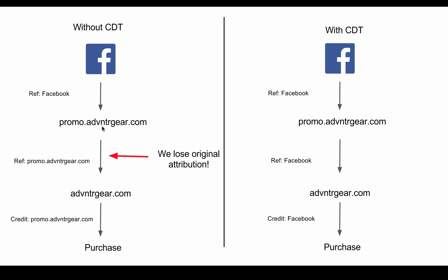So then what happens? They hit the landing page, they make an offer, then they go into the shopping cart. Now in our case, our shopping cart lives on adventuregear.com, which is the main Shopify site. Here's the problem — between this handoff, promo.adventuregear.com and adventuregear.com. If we don't have cross-domain tracking set up, these are going to be two very different domains with different UA numbers. What happens is right here in this handoff, we lose the original attribution. That means if we go into our adventuregear.com analytics page, we're going to see a referral from promo.adventuregear.com — all reference to Facebook will be totally stripped out, meaning we can't track the original Facebook ad or click. All we see is a referral from promo.adventuregear.com.